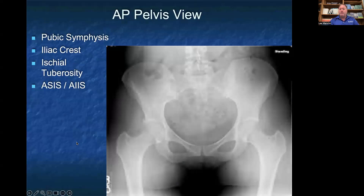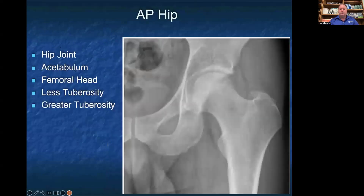In the AP view, this gives us a great view of the pubic symphysis. We also can look at the contour of the iliac crest, the ischial tuberosity where the hamstrings attach, the anterior superior iliac spine where the sartorius attaches, and the anterior inferior iliac spine where the rectus femoris attaches. The AP view of the hip gives us a closer look at the actual ball and socket of the hip joint. We can see the acetabulum and evaluate the shape and contour of the femoral head. We also have a better view of the lesser tuberosity where the iliopsoas attaches, and the greater tuberosity.